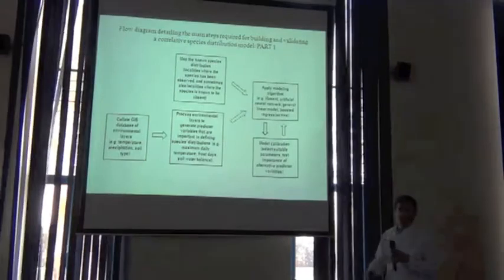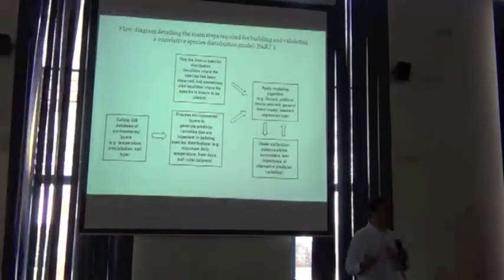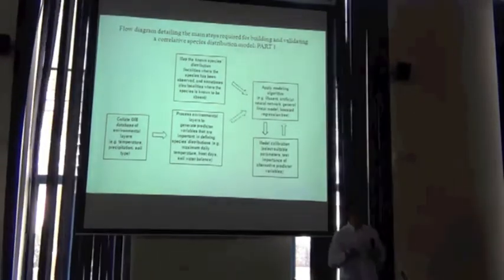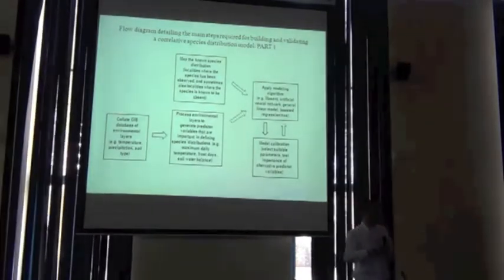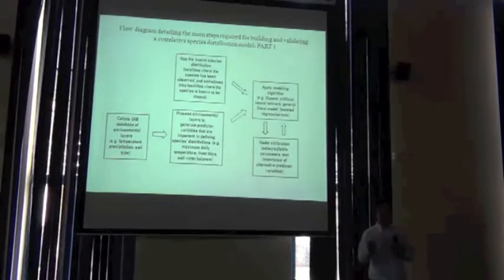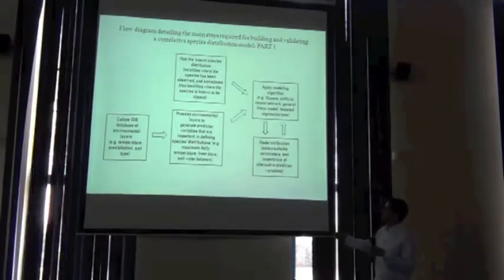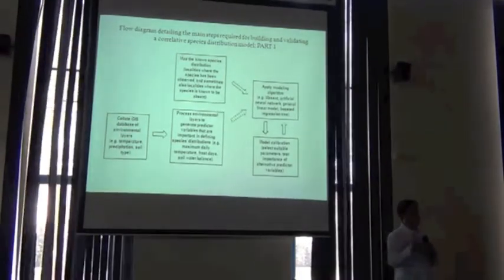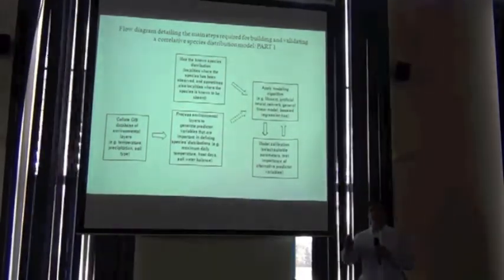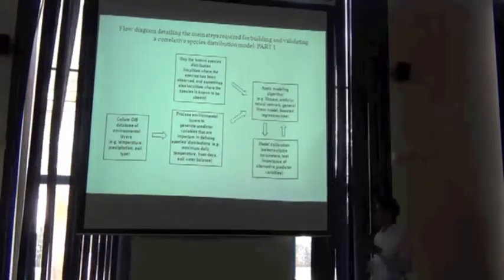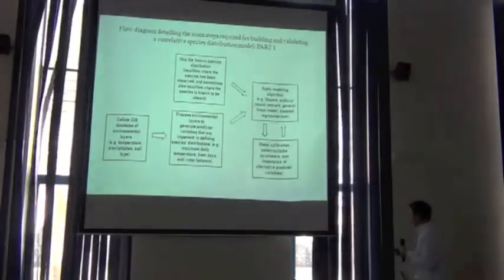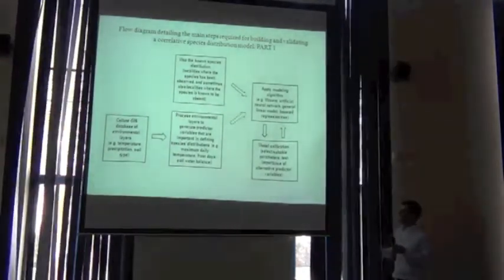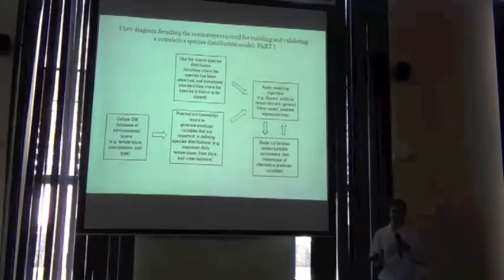So these would be variables that we think have some sort of direct physiological role in influencing the distribution of the species. So instead of just talking about monthly values of precipitation or soil type, we might actually generate variables based on this GIS database that might be things like the maximum daily temperature. If you're interested in a lot of species, that's a variable that's going to be potentially very important. Or we might be interested in the number of frost days during the year. Again, there's a variable that could have a direct physiological role if you're interested in agricultural plants or any number of organisms that respond to frost days. Or a soil water balance. So we might not just be interested in what the soil type is, we've got a certain podzol or cambisol or something like that. What we're really interested in is the water holding capacity in the soil. If you're interested in plants, for example, that's the variable that's important.